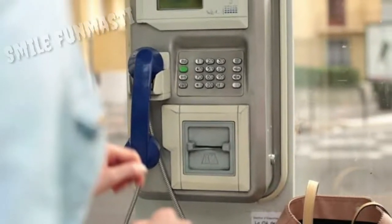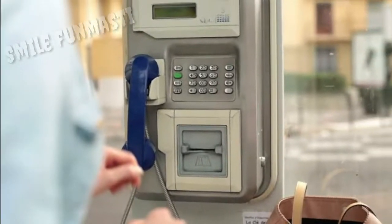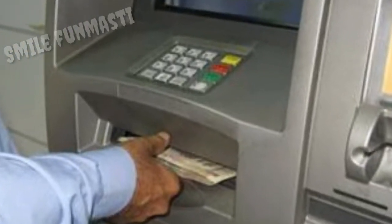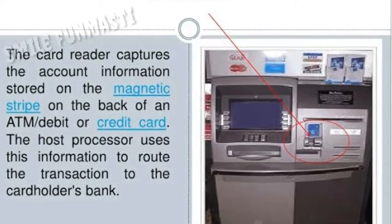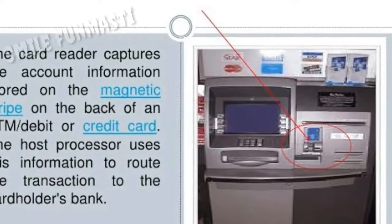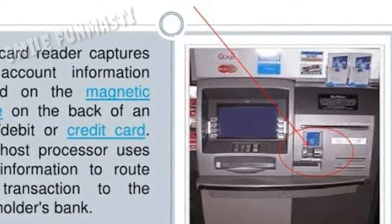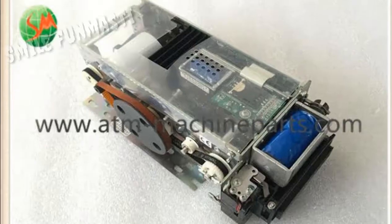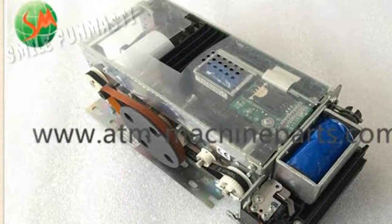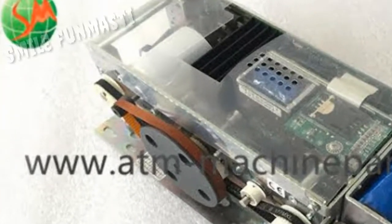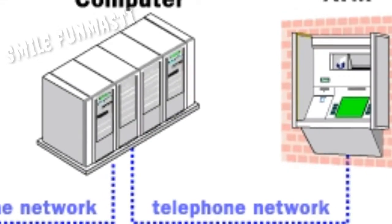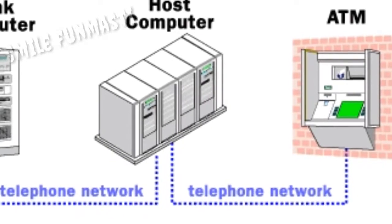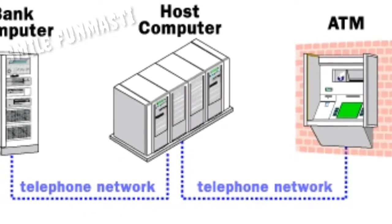The host is primarily owned by the bank. When a client inserts his card to withdraw money, the client's account data is stored on the magnetic strip on the back of the card. The card reader reads the data from the magnetic strip of the card, and the data from the card is sent to the host processor.